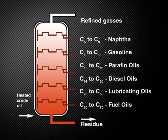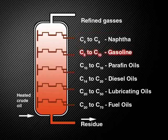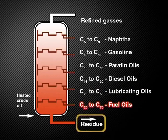Here is a group of chemicals called naphtha with very low boiling points, then gasoline, paraffin oils, diesel oils, lubricating oils, fuel oils, and the residue at the bottom with the highest boiling point. Amazingly, we all know and probably use every one of these types of chemicals in our lives.